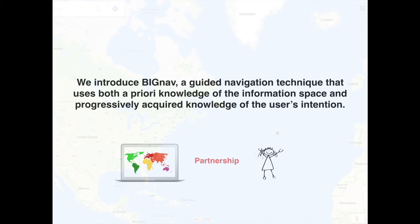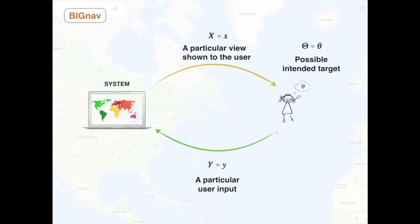We introduced Big Nav, a guided navigation technique based on Bayesian experimental design and information theory. Instead of simply executing user inputs, Big Nav prompts users for information, creating a form of partnership.